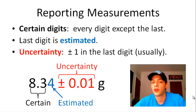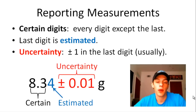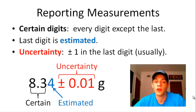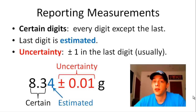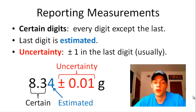Showing the uncertainty in this case is a little bit redundant because, unless otherwise noted, the uncertainty is usually plus or minus 1 in the last digit. But that's not always going to be the case. If you see just 8.34 grams without an uncertainty shown, that does not mean the measurement is without uncertainty. Every single measurement has an uncertainty because every single device has its limitations. If the uncertainty is not shown, it is understood to be plus or minus 1 in the last digit.